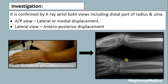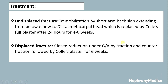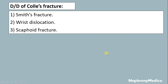Treatment for undisplaced fracture: immobilization by a short arm back slab extending from below the elbow to the distal metacarpal heads, which is replaced by a Colles' plaster after 24 hours, for 4–6 weeks. For displaced fracture: closed reduction under general anesthesia by traction and counter-traction, followed by a Colles' plaster for six weeks.